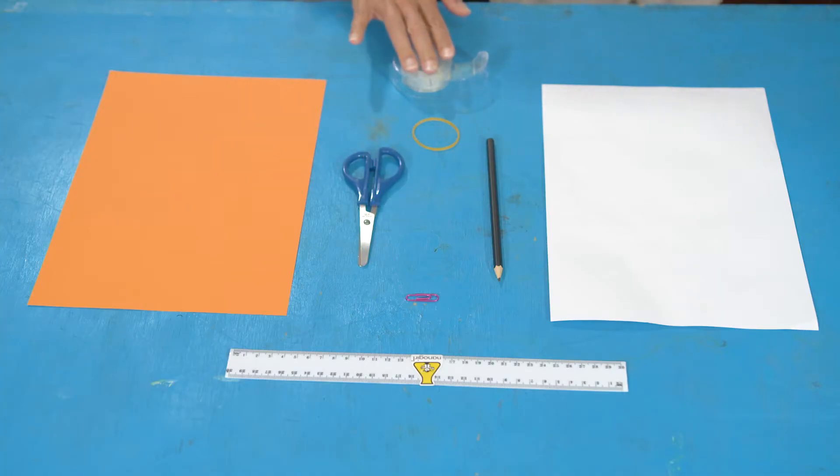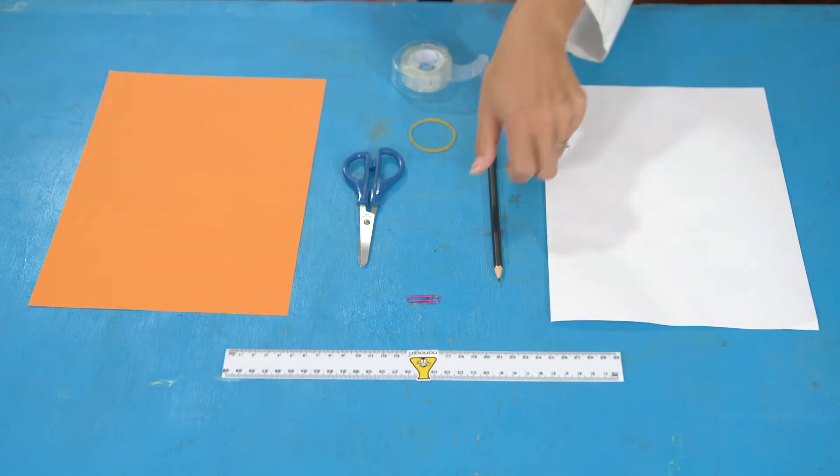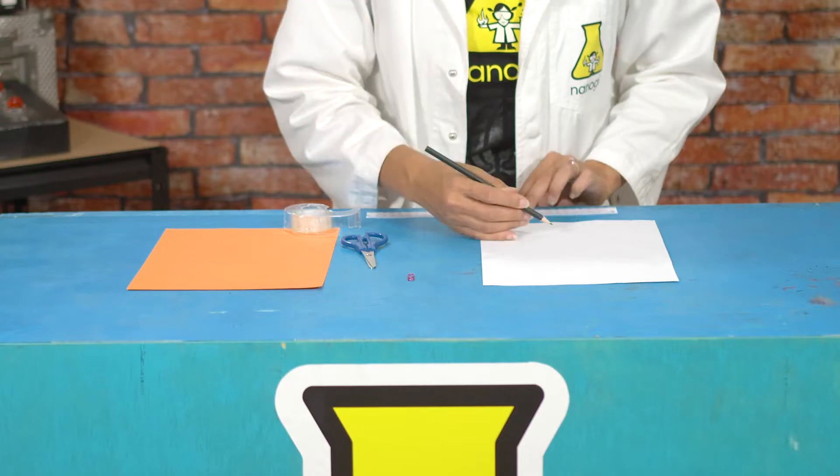For this experiment you will need scissors, tape, a paperclip, a large elastic band or a hair elastic, a sheet of thin card, some plain paper, a ruler, and a pencil. Start by measuring and drawing a rectangle on your piece of paper that's 16 centimeters long and 8 centimeters wide, then cut it out.